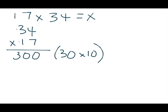Now I'm going to move on to the 4 in 34 and multiply that by the 1 in 17. The 4 in 34 is in the ones place, so 4 ones is simply 4. Remember that the 1 in 17 is in the tens place, so 1 ten is 10. 4 times 10 is 40. Remember to line up each digit in the correct place value position.